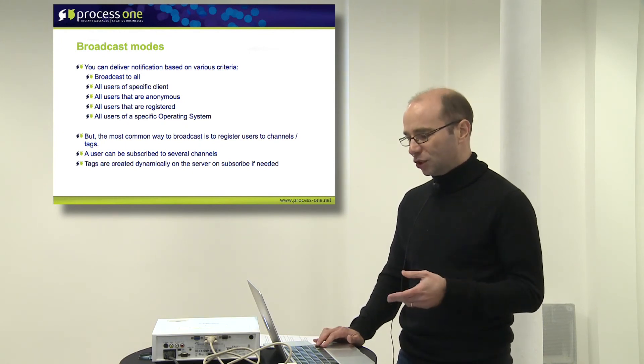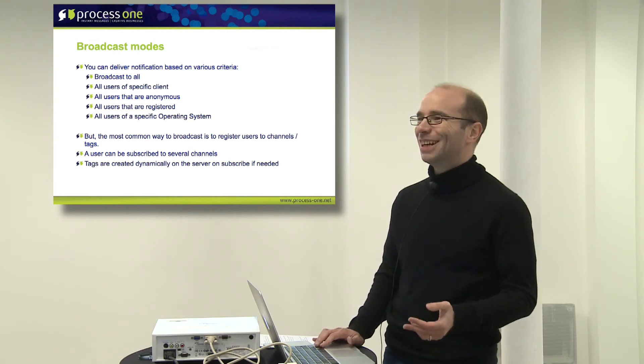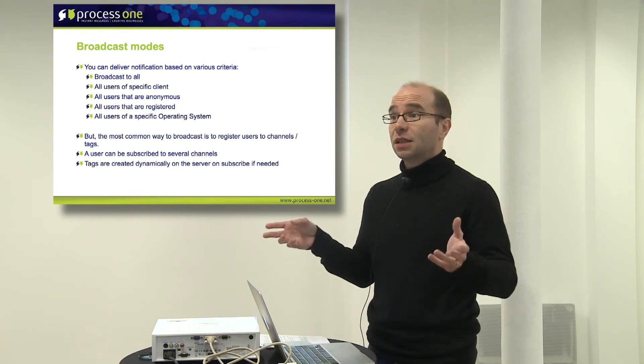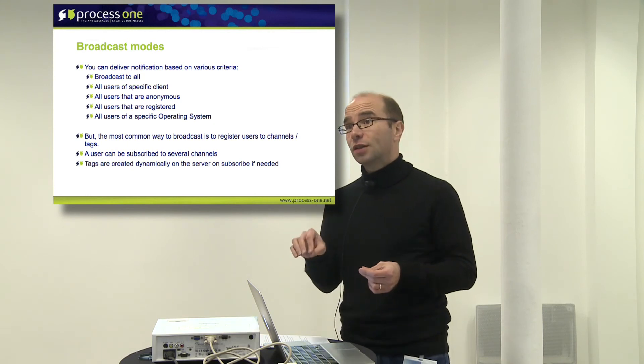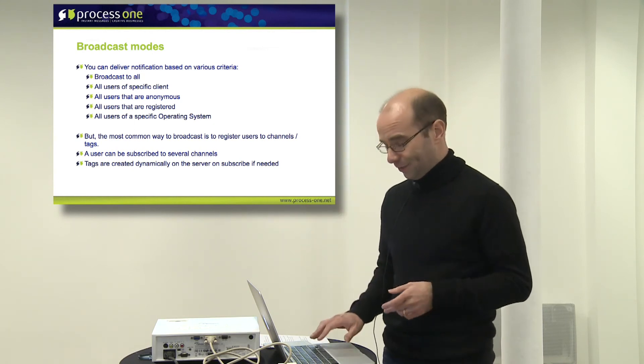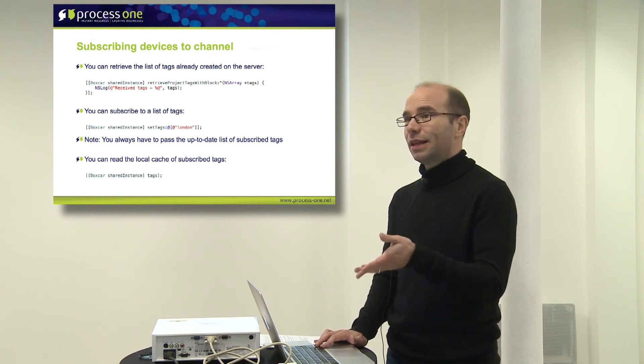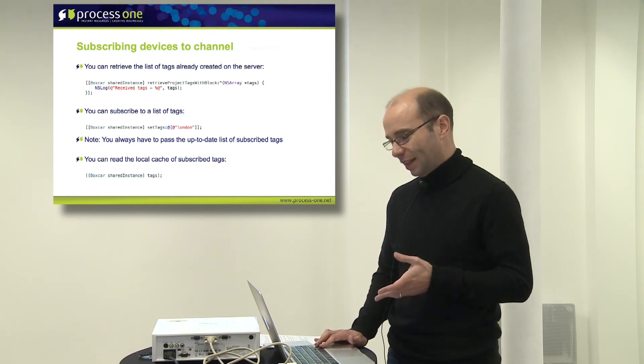We have several broadcasting modes. You can broadcast to all users of your application, to specific clients — iOS or Android — to anonymous users, or tell them to register if you can benefit from that. And the most important thing: most companies that deploy push notifications use tags, which are channels. It allows the application to tell the server that this user is interested in breaking news, for example. And when you send a notification to breaking news, all the users interested in it will get it. This is the most used feature — broadcasting by channel. This is the code — very easy. You can retrieve the tags from the server and set the list of tags you want that device to be subscribed to. And basically that's it.